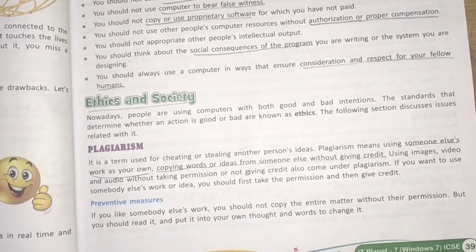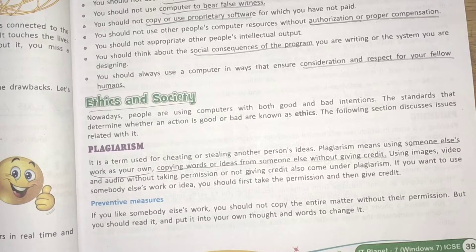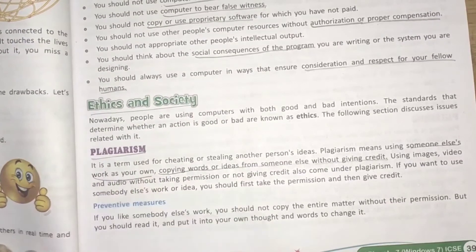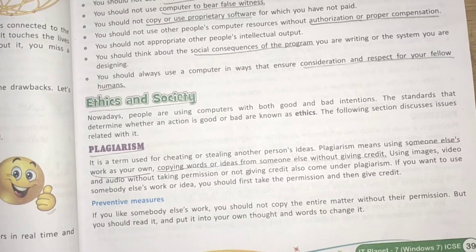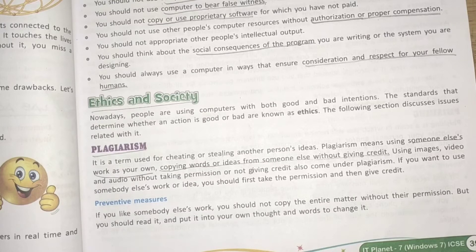If you want to use someone else's work, you should take permission from that person and give them credit. When we are not doing that, it is called plagiarism. Safety measures: you should not copy the entire work without permission. You can take the idea and make changes according to your own thoughts, but you should not copy the entire work, especially without taking permission.